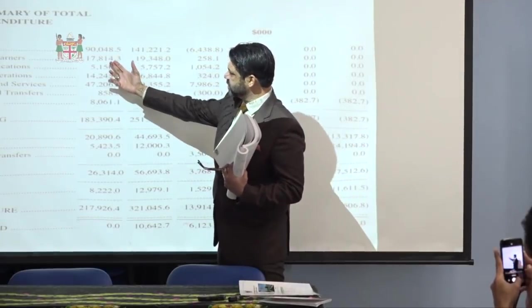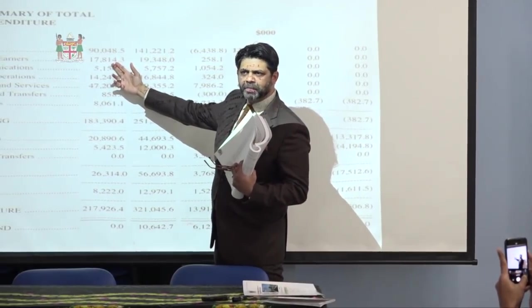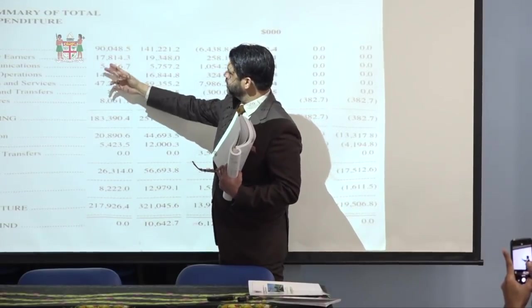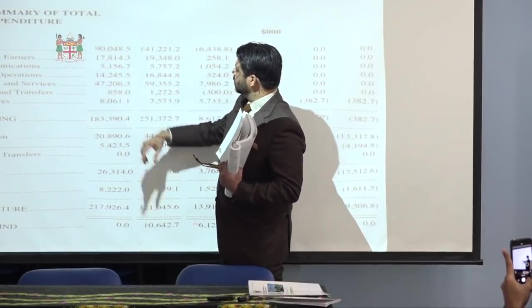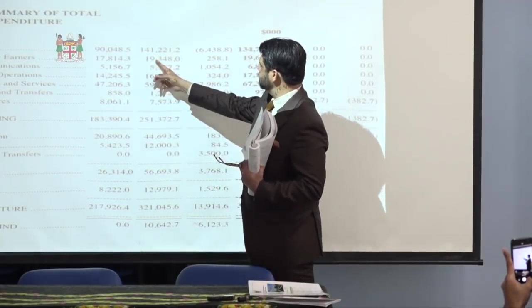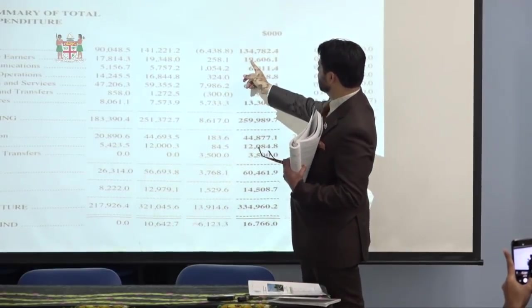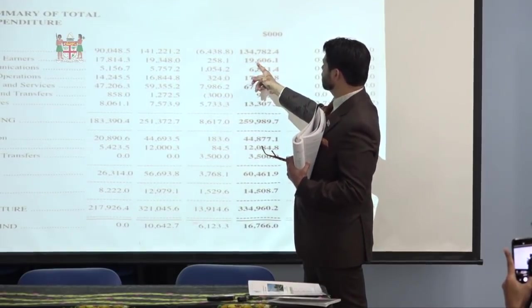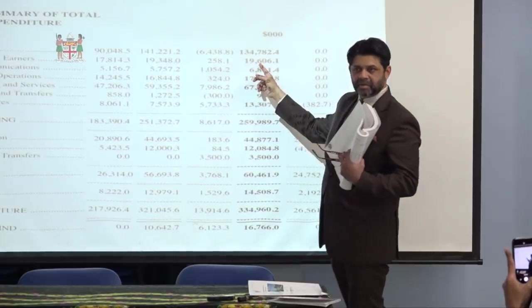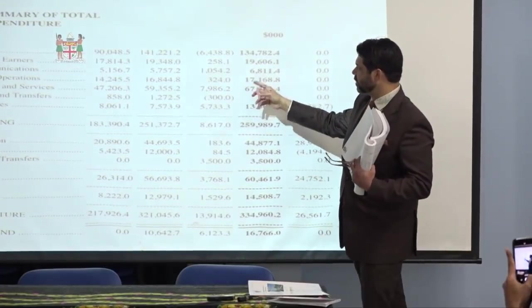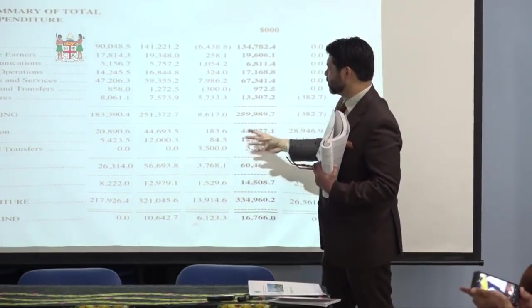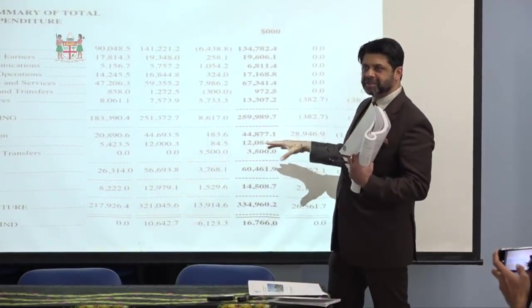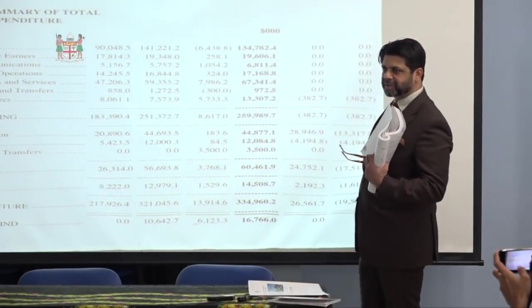Government wage earners — normally hourly paid people, casuals — went from $17 million, then $19 million, then $19.6 million, up by $258,000. Everything has a summary so you can track the expenditure year to year.